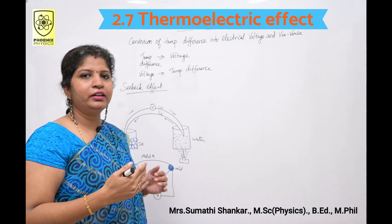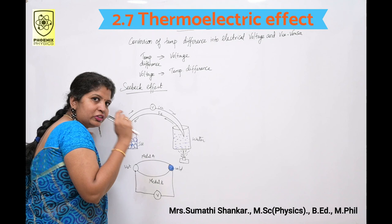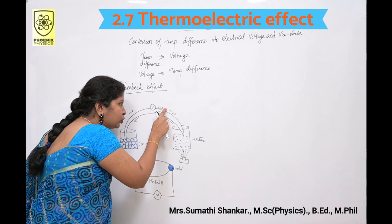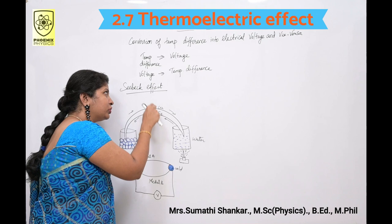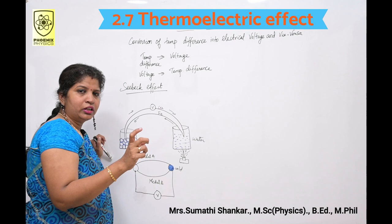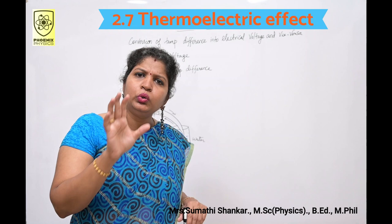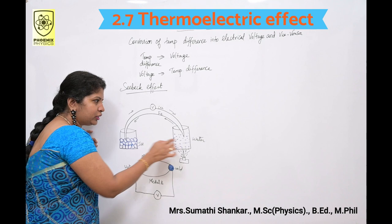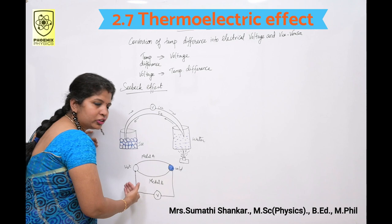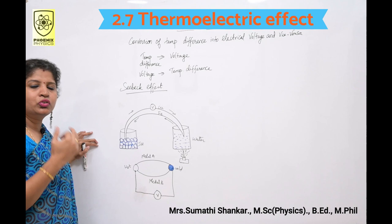Next we are going to discuss the Seebeck effect. Seebeck discovered that in a closed circuit consisting of two dissimilar metals, when the junctions are maintained at different temperatures, an EMF is developed — this is known as the Seebeck effect. When heat is applied to one of the two conductors, electrons become excited and start moving towards the cooler side. Here I have a cold junction and here I have a hot junction. If the hot and cold junctions are interchanged, the direction of the current also reverses, so we can say the Seebeck effect is reversible.